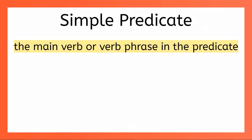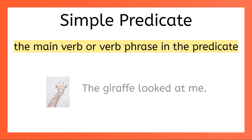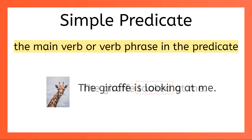In the sentence a giraffe looked at me, the simple predicate is the verb looked. If we change our sentence to read the giraffe is looking at me, our simple predicate would be the verb phrase is looking.